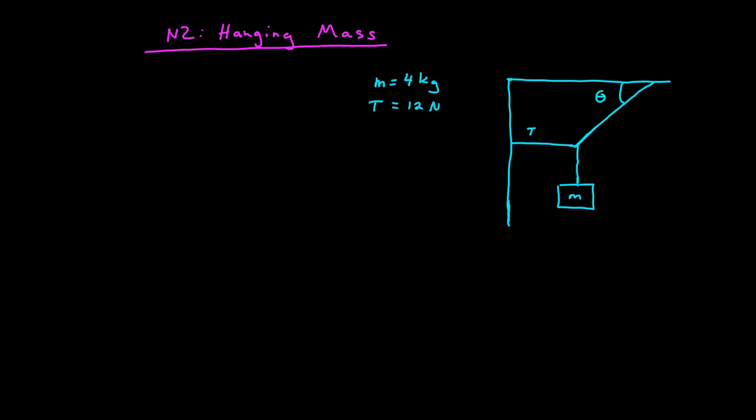In this video, I have a hanging mass here with this system of cables. I'm given that it has a mass of 4 kilograms, and the horizontal rope here in this picture has a tension in it of 12 newtons. And my question I'm asked is, what is the angle theta between this rope and the ceiling?